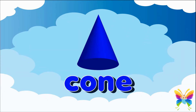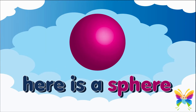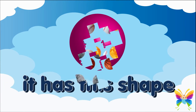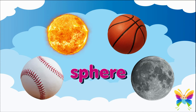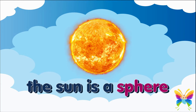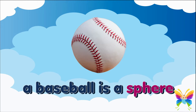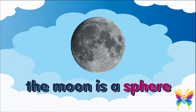Here is a sphere. It has this shape. These are things that have the shape of a sphere — you can see them every place. The sun is a sphere, a basketball is a sphere, a baseball is a sphere. The moon is a sphere.